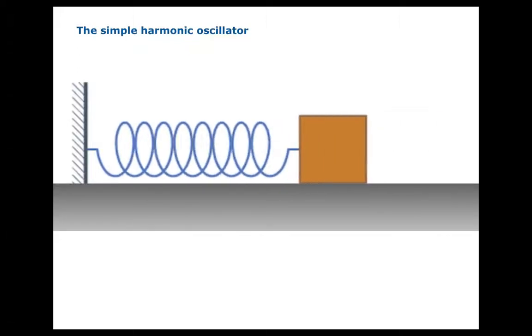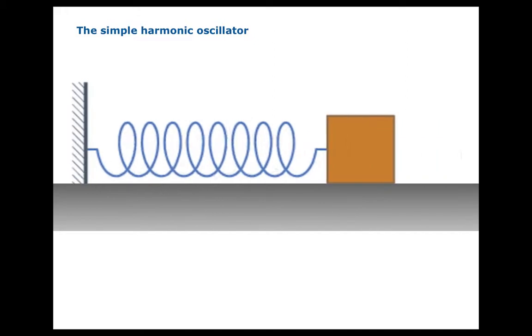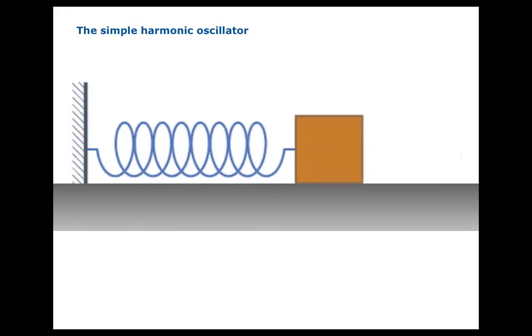In this video, we're going to examine the motion of the simple harmonic oscillator, a mass attached to a spring that is oscillating horizontally.